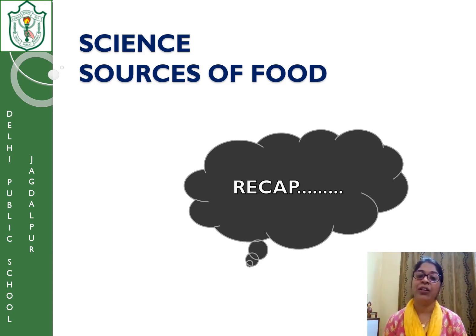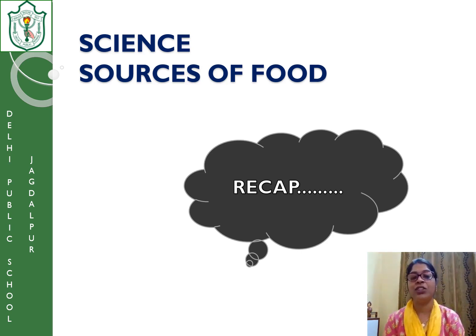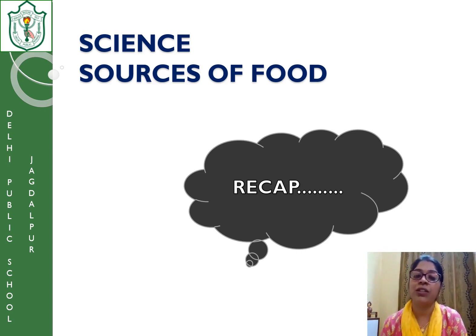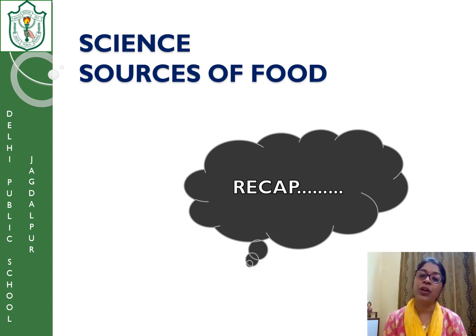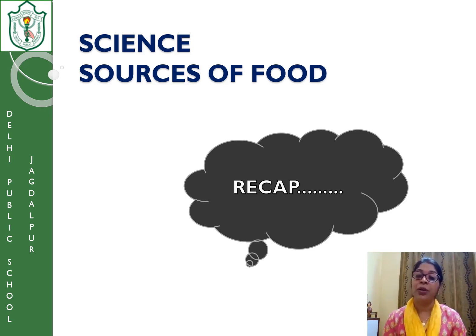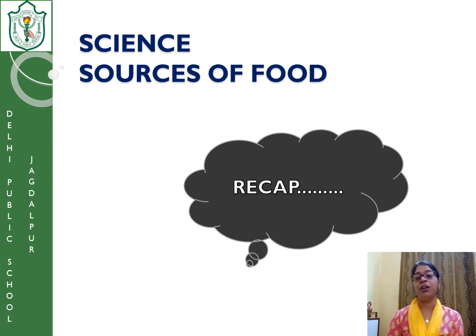Why do we add these ingredients? Because we need different types of nutrients from the food, and these important components add different nutrients required for our body. We also started with the sources of food, divided into two categories: plant source and animal source. Plants prepare their food and store it in their different parts by the process of photosynthesis, which is why plants are called producers — they produce food for others as well as for themselves.